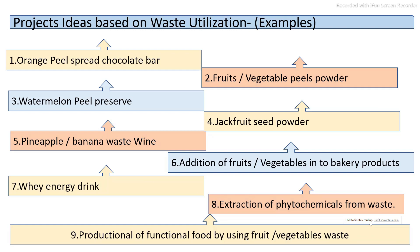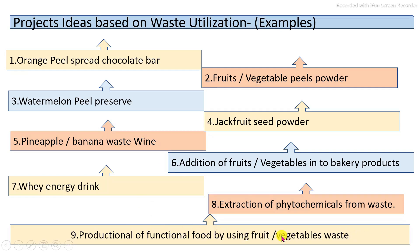Project ideas based on waste utilization — whatever industrial waste is generated, this waste is utilized for the production of value-added products or agricultural-related products. For example, orange peel is used for incorporating into a chocolate bar. Pineapple and banana zest is converted to wine or other value-added products. In the fruits and vegetable processing industry, whatever peel is generated contains phytochemicals. These phytochemicals are extracted and added to products to prepare a number of value-added products.